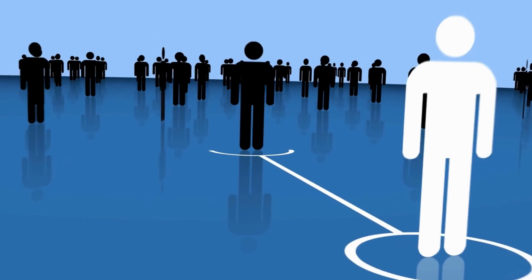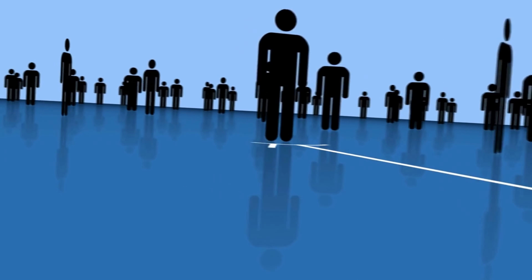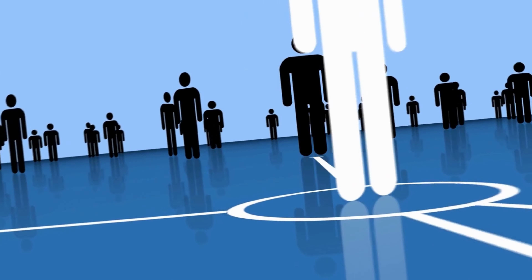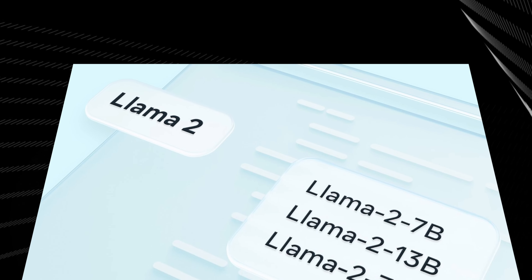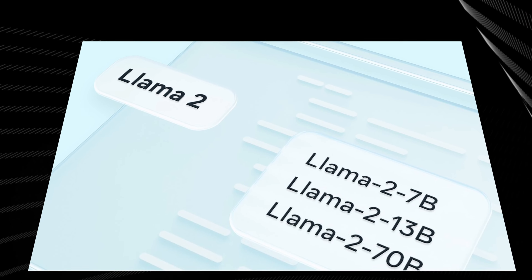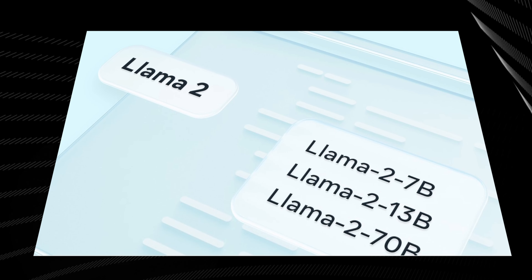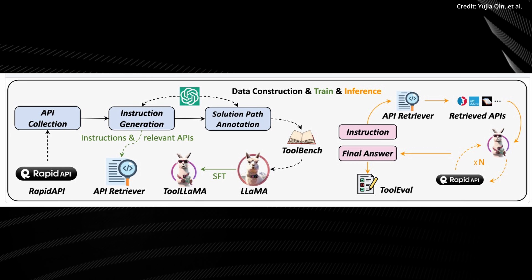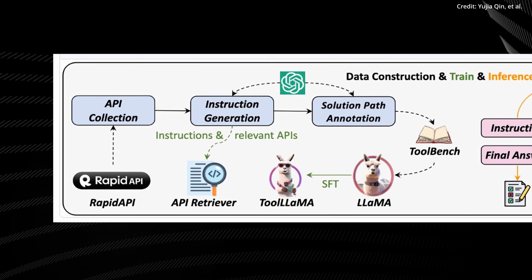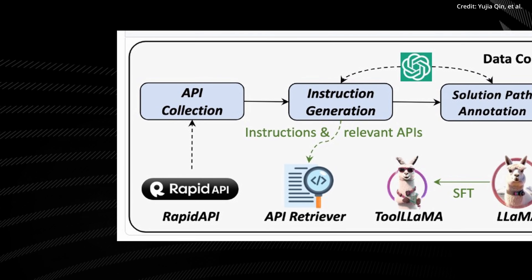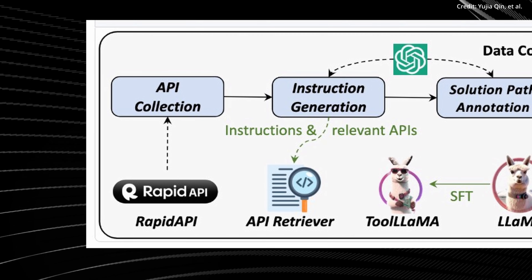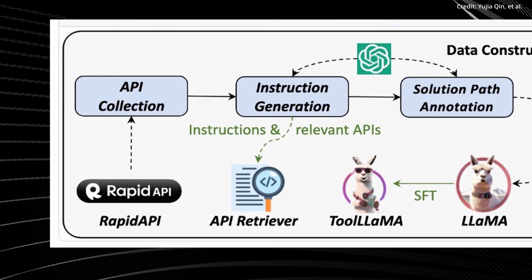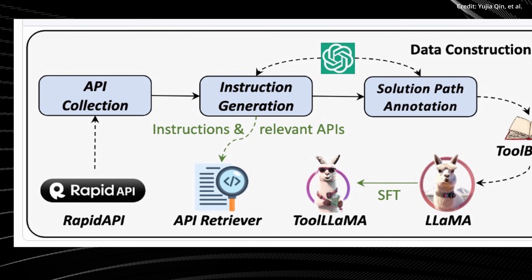Despite its impressive capabilities, the researchers acknowledge that there are a few kinks to be straightened out in the Dynalang program. For instance, its architecture leaves something to be desired in the creation of long horizon environments. Additionally, while the text produced by Dynalang is passable, it falls short in comparison to larger language models.